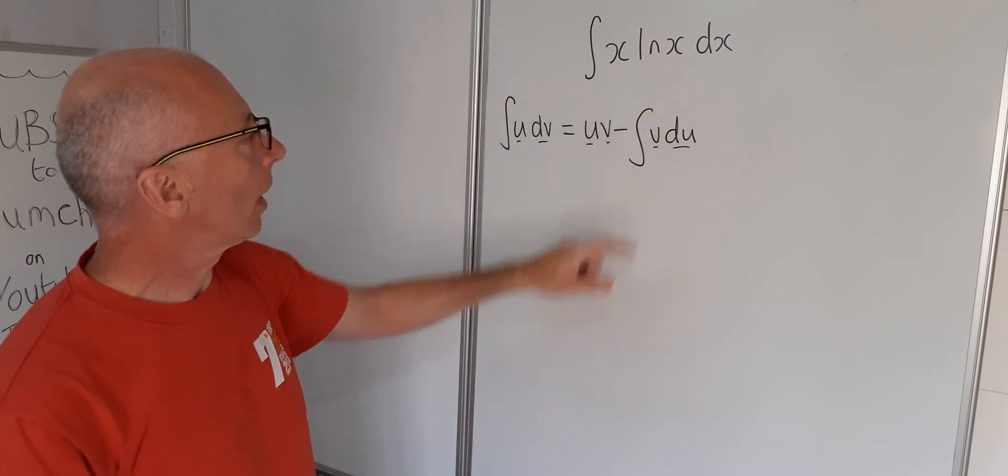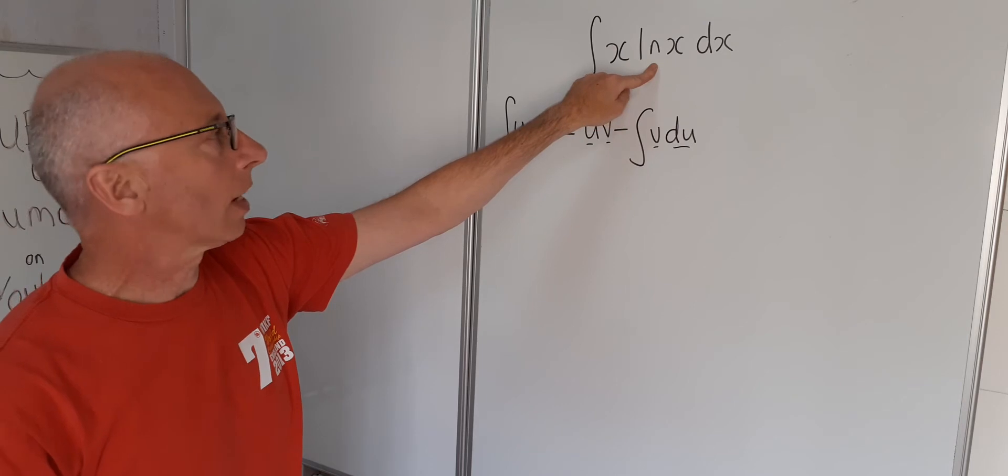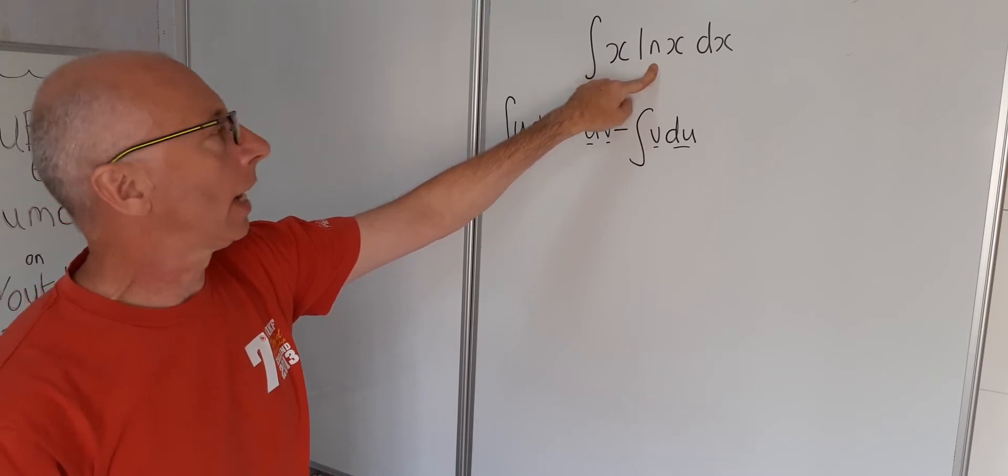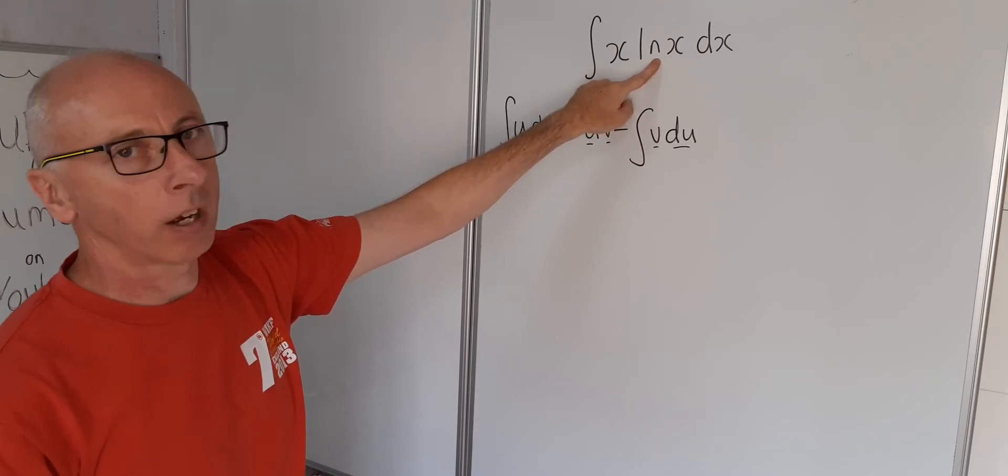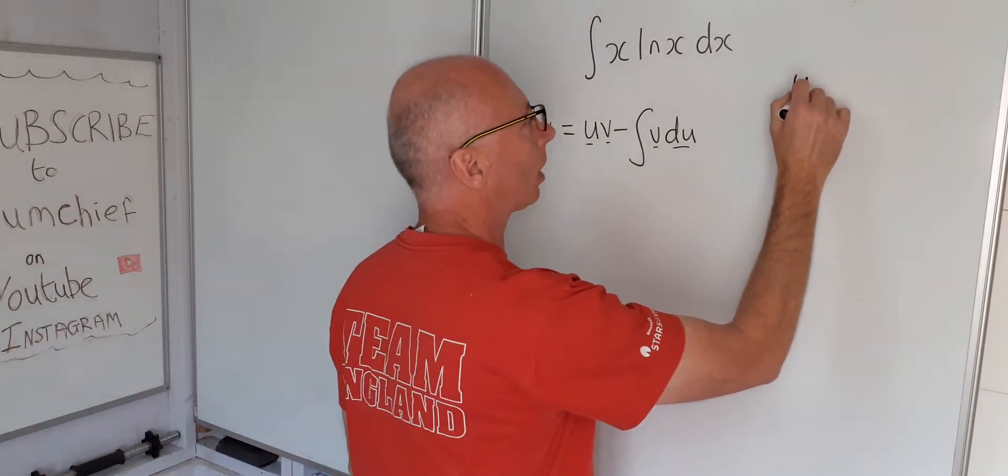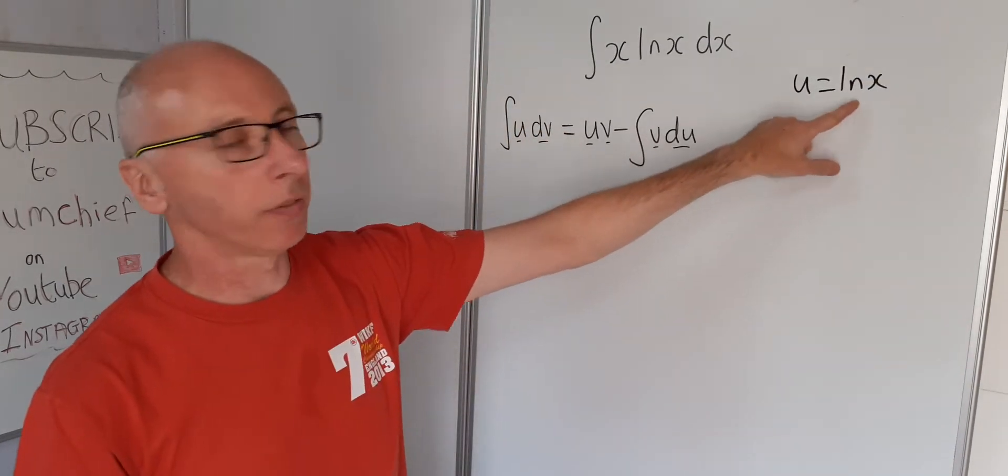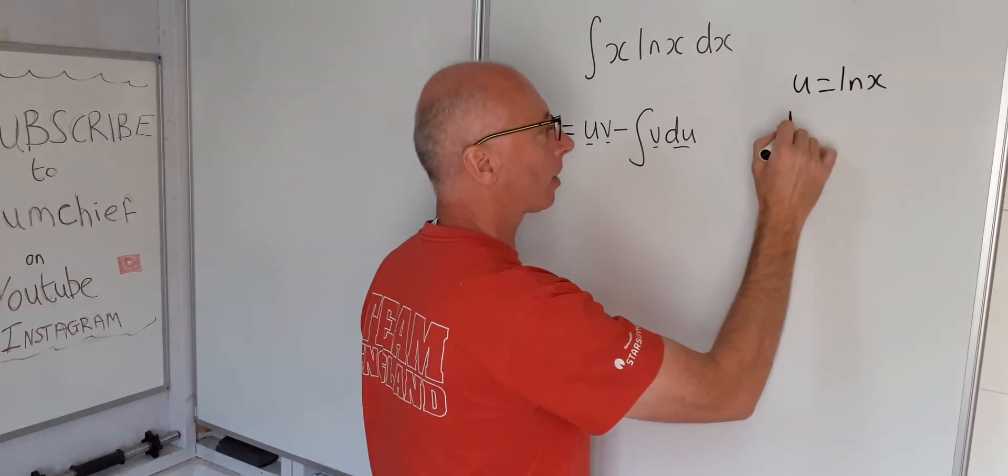So x and natural log of x. To integrate natural log of x again, that's integration by parts again. So that's going to be our u, the best way forward for that. So we'll let u equal natural log of x because then we can take the derivative of that quite easily and say that du